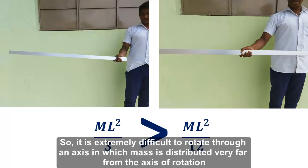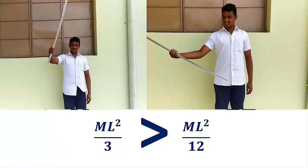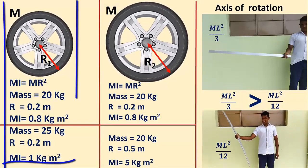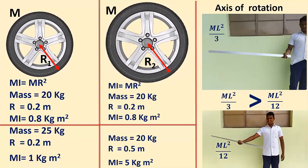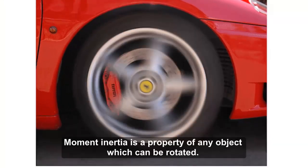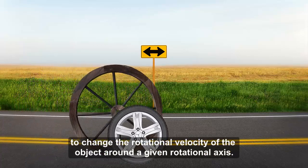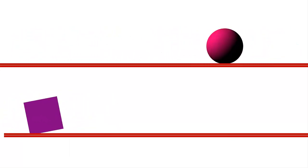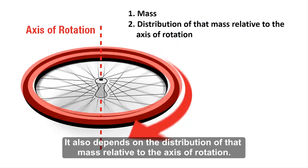So it is extremely difficult to rotate through an axis in which mass is distributed very far from the axis of rotation. Comparing these examples, we can conclude that moment of inertia depends on mass of the object, radius of the object, and axis of rotation. Each shape has a different formula to calculate moment of inertia. It is a scalar value which tells us how difficult it is to change the rotational velocity of the object around a given rotational axis, and it also depends on the distribution of mass relative to the axis of rotation.